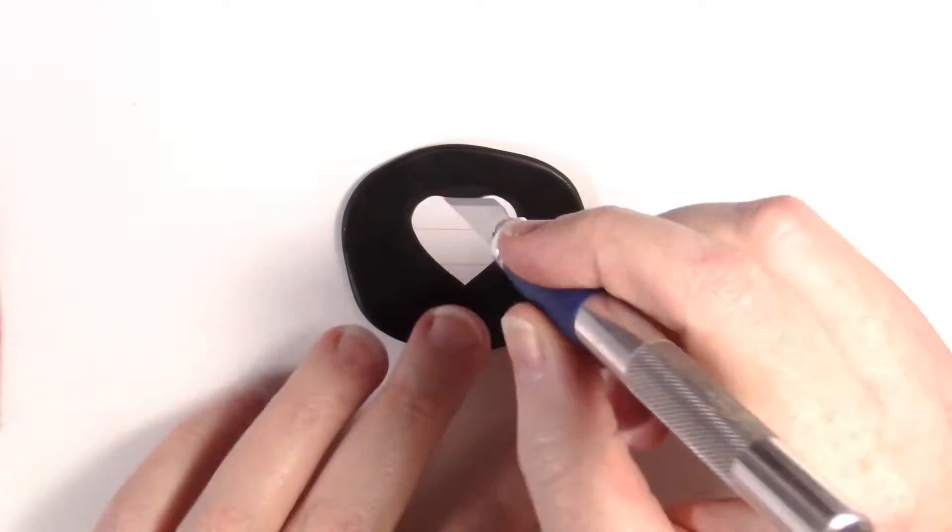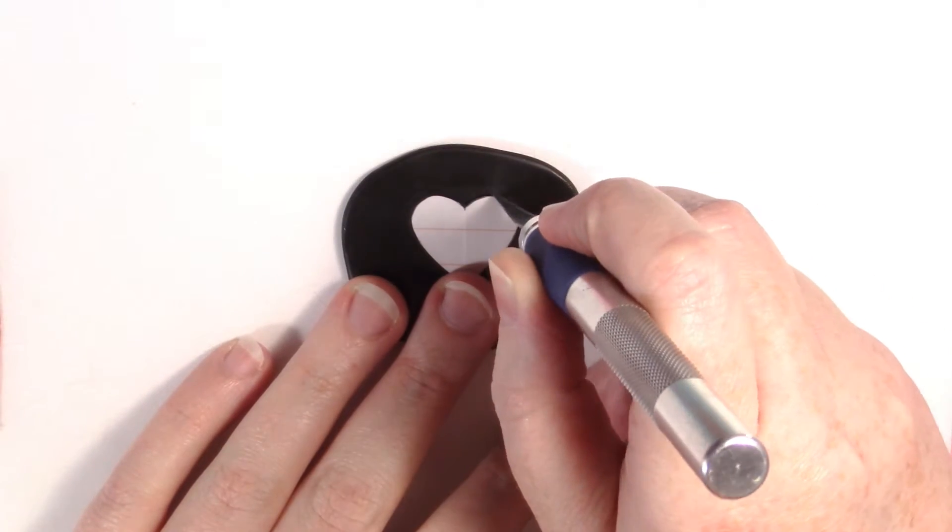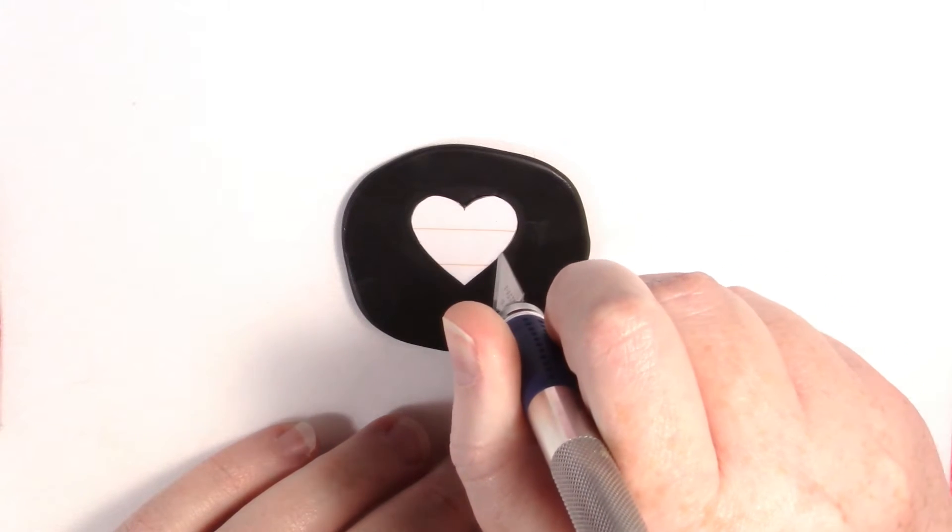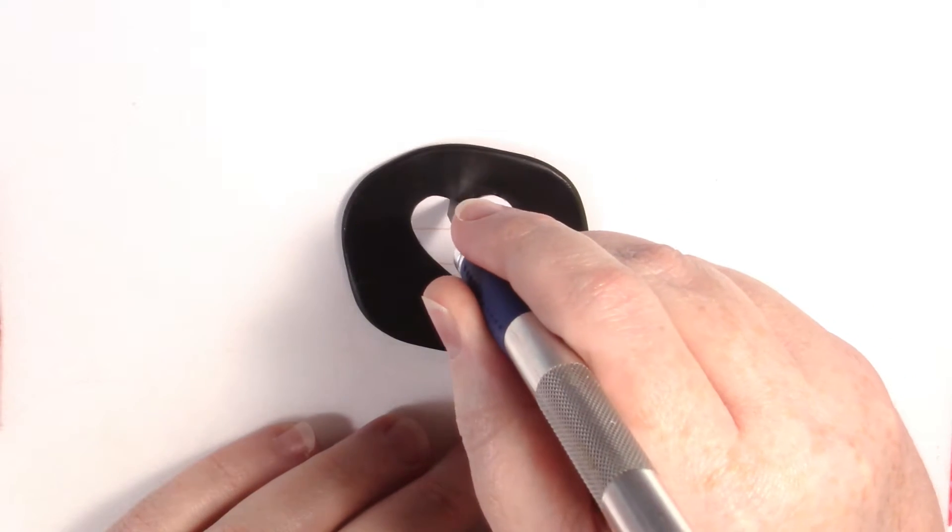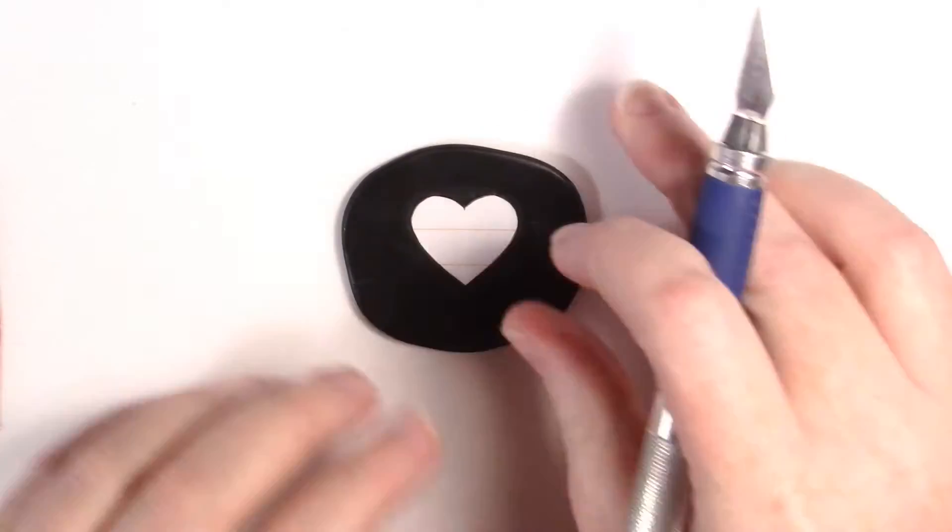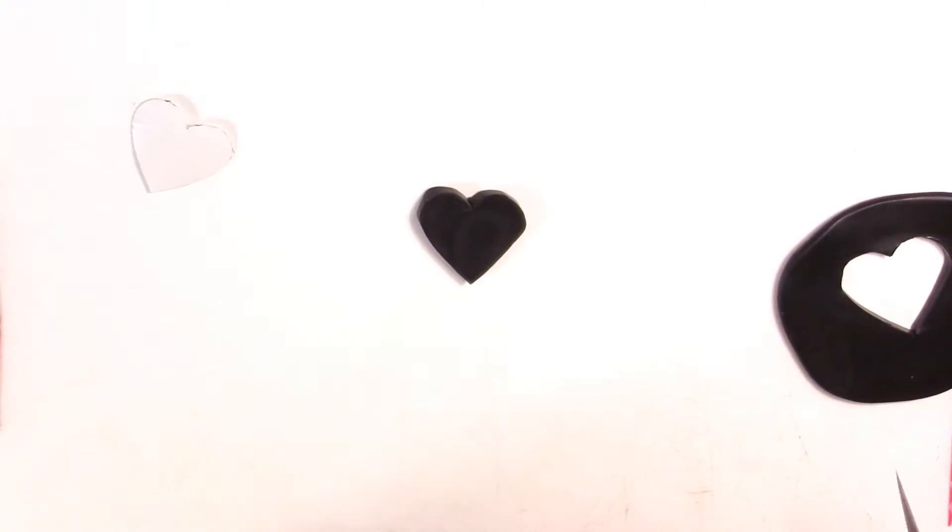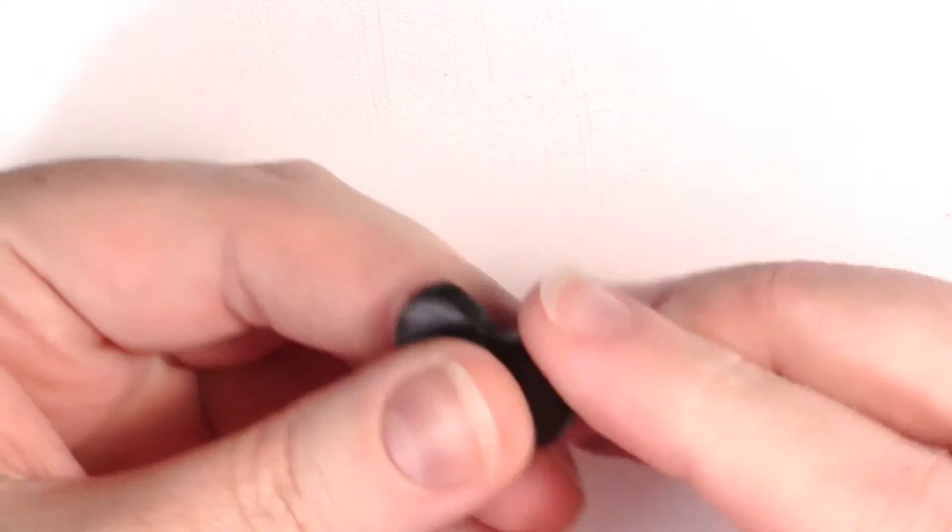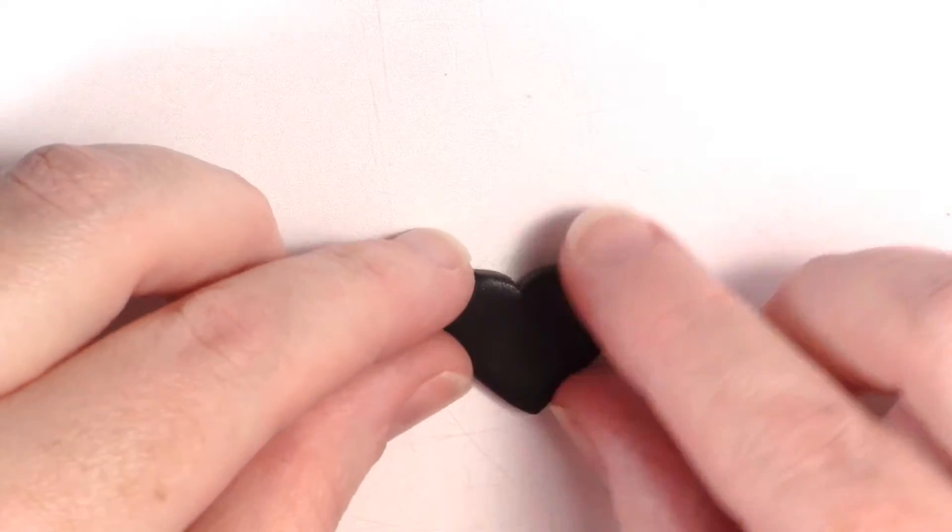Place your heart template on the clay and cut around it. Once it's all cut out, you'll want to smooth and round out the edges.